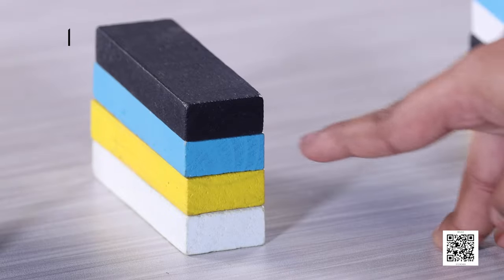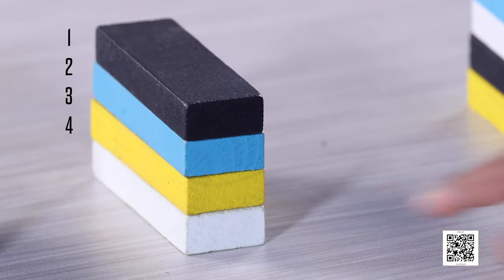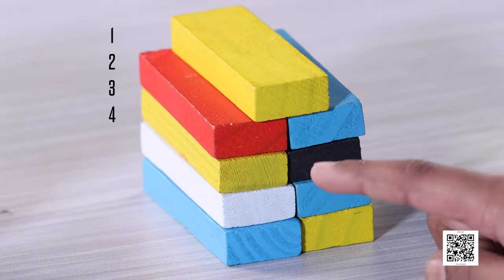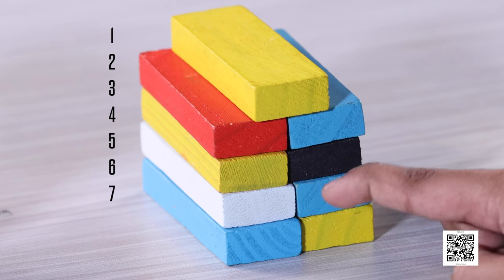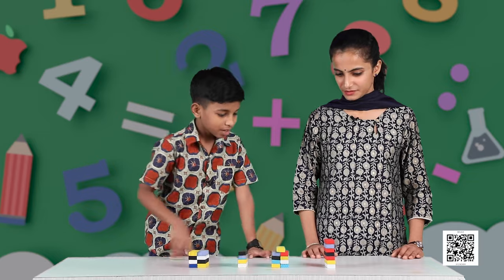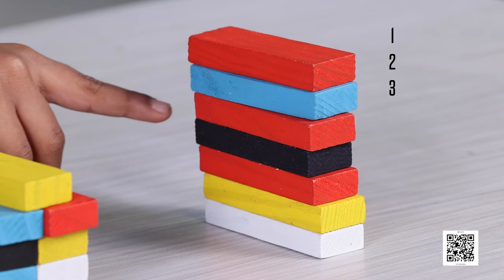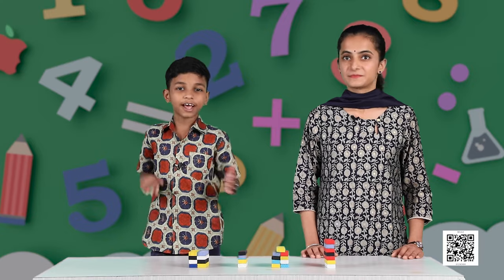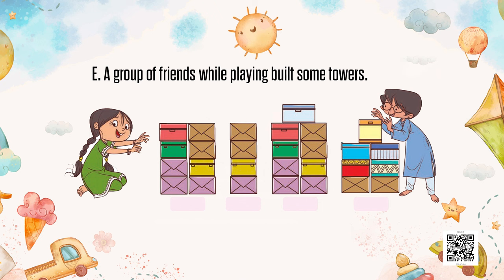This one? 1, 2, 3, 4 — this has used 4 blocks. And this one? 1, 2, 3, 4, 5, 6, 7, 8, 9 — this tower has used 9 blocks. And this one? 1, 2, 3, 4, 5, 6, 7 — this tower has used 7 blocks. So we have 8, 4, 9, and 7.